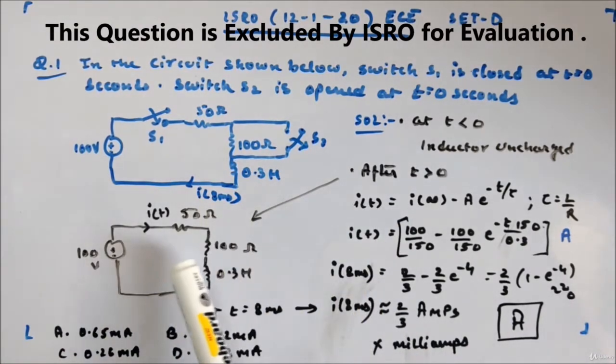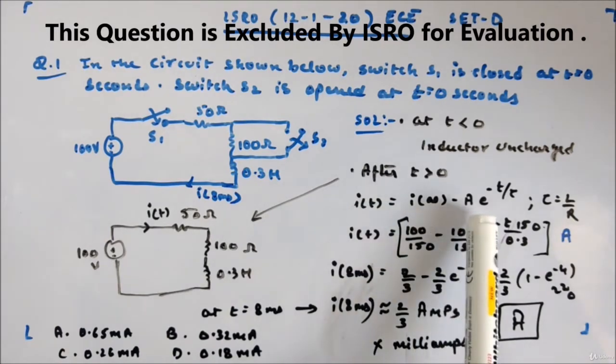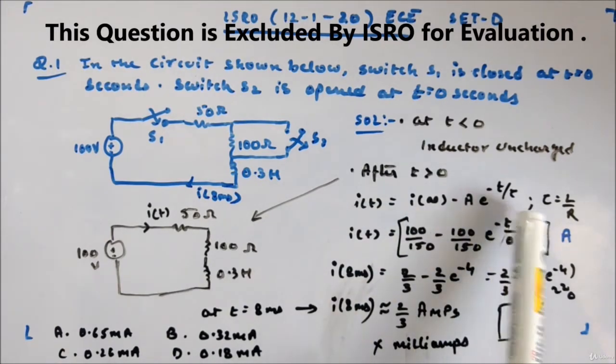This is a normal RL circuit with source, so the current through the inductor would be i infinity minus A e to the power minus t by tau, where tau is L by R.